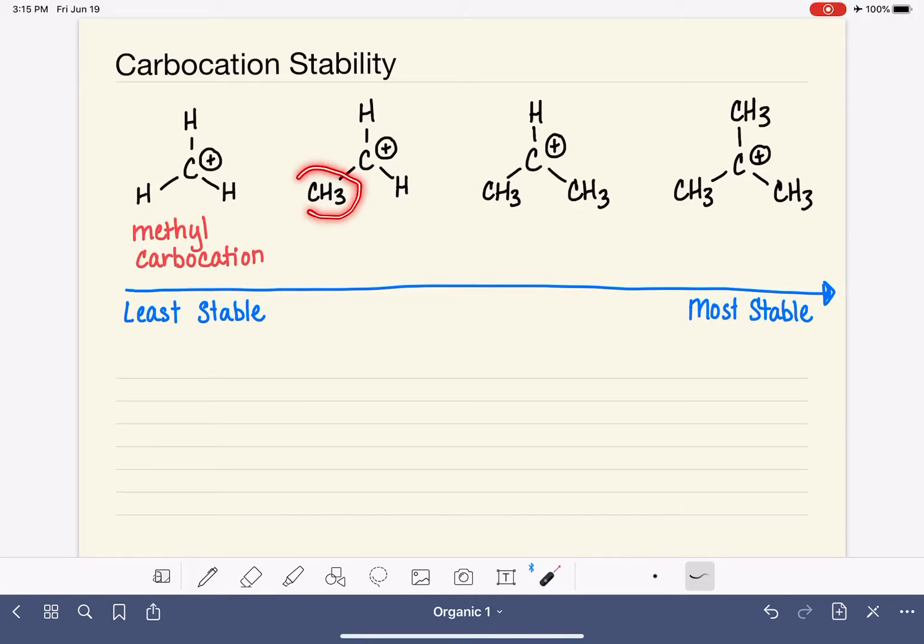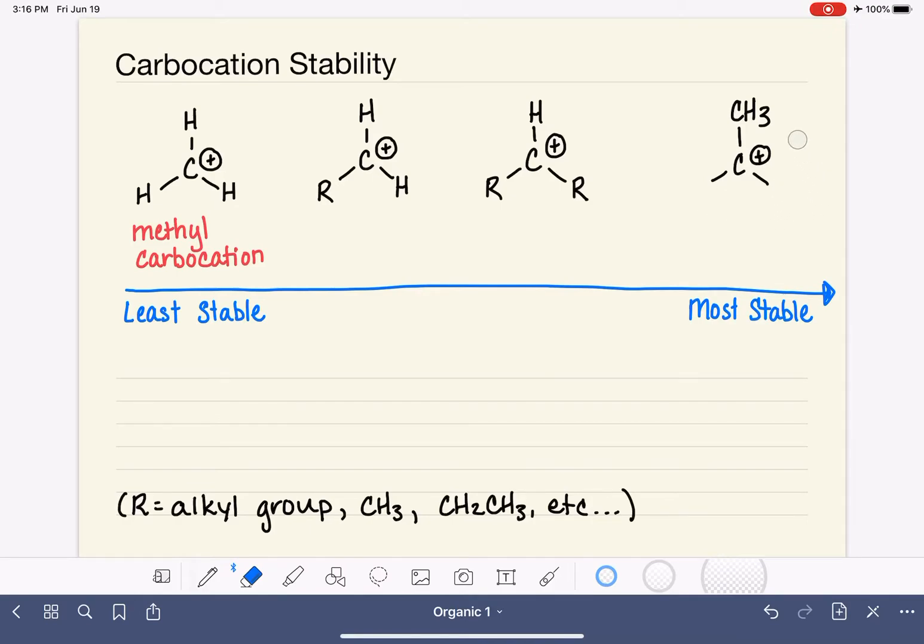It actually doesn't matter what the alkyl group is that happens to be attached to the positively charged carbon. Any alkyl group increases stability. So what we're going to do is erase these methyl groups that I attached to the molecule, and we're going to replace that with the letter R. In organic chemistry, we use the letter R to represent some sort of alkyl group, like a methyl, which we had in our drawings, or like an ethyl group CH2CH3, or anything, any kind of alkyl group at all. So we can replace these methyls with just the symbol R to represent alkyl group, and this allows us to have a generalized ranking of carbocations.